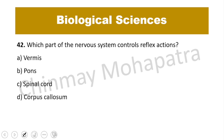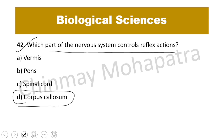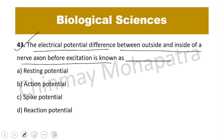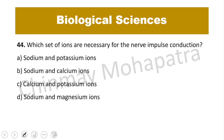Question 42: Which part of the nervous system controls reflex action? The right answer is the corpus callosum — 10 cm long, controls reflex action. Question 43-44: The electrical potential difference between outside and inside of a nerve cell before excitation is known as resting potential.